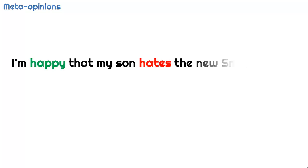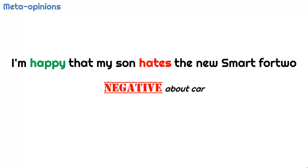Meta-opinions are opinions about opinions, so a meta-opinion's target is also an opinion. 'I'm happy that my son hates the new Smart Mark 42.' The author is positive about her son's opinion of the smart car, which is the target of the meta-opinion, so the meta-opinion is positive. However, the meta-opinion's target is her son's negative opinion. We as humans know that overall this is a very negative statement about the smart car, because we can infer that the author is relieved her son does not want to purchase it — maybe she saw its poor score in consumer reports, or thinks its low weight would make it dangerous on the highways.